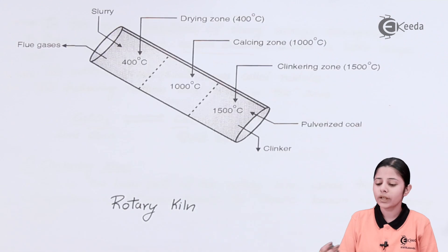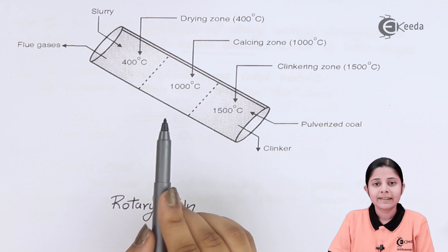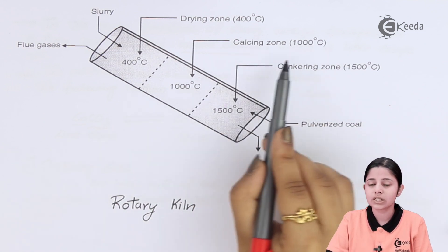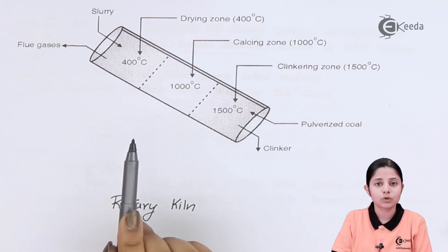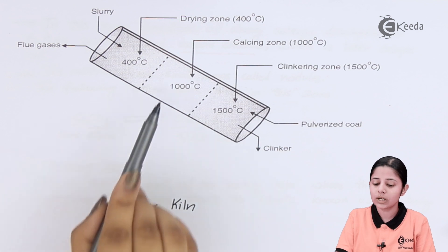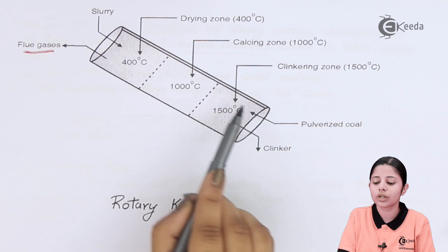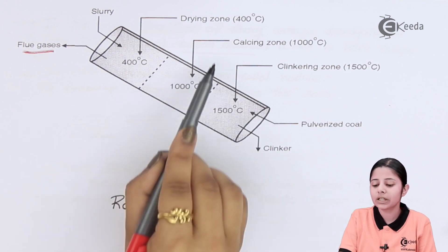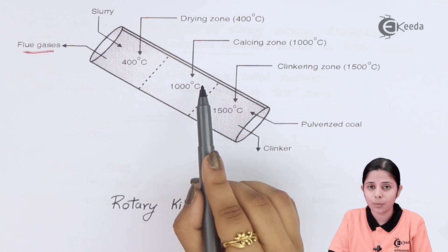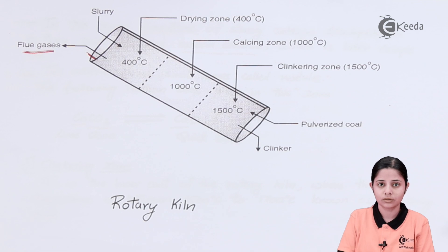In the diagram, the middle part at 1000°C is the calcination zone, also known as the calcine zone. Here the limestone gets converted into quicklime and CO2. The CO2, being a gas, escapes out through the ends of the inclined tube as flue gas. Flue gases are all the waste gases produced during the reactions happening inside the rotary kiln.